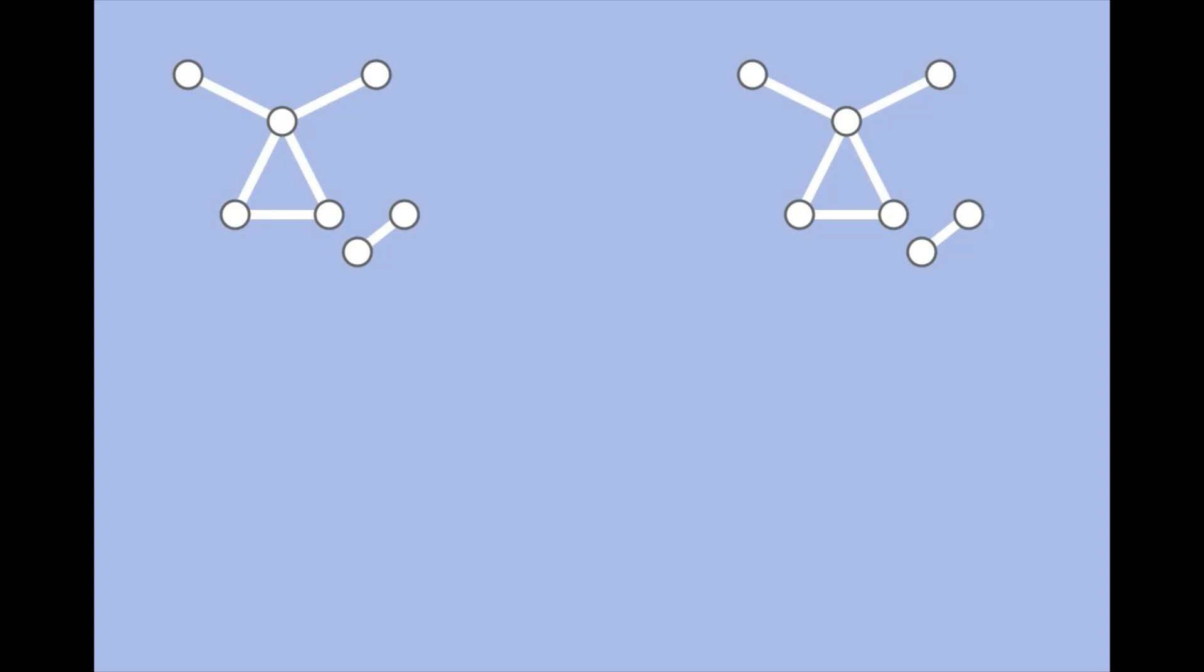But what if there is no augmenting path in the graph? Last time, we had an issue, where just because the matching is maximal, you can't make it bigger just by adding more edges to it, it doesn't mean it's maximum.